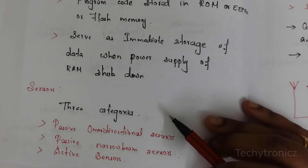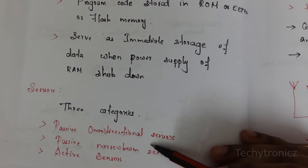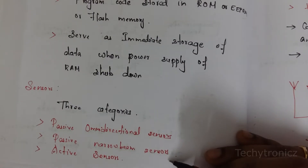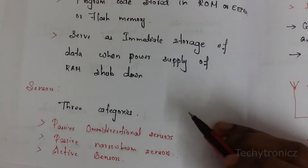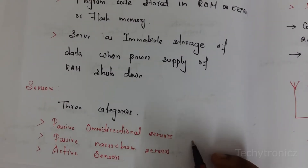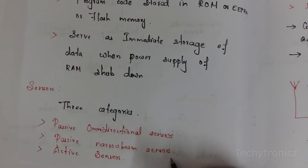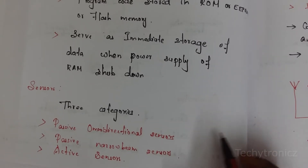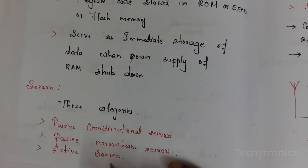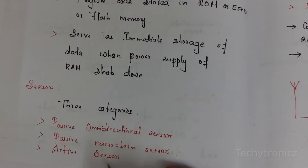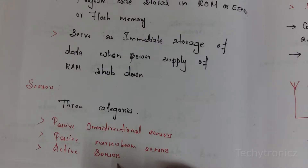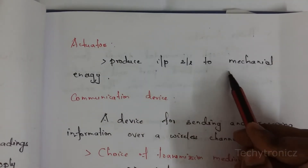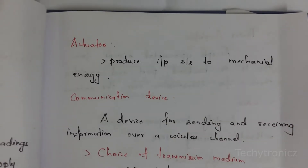The next component is sensors, which fall into three categories: passive omnidirectional sensors, passive narrow beam sensors, and active sensors. Passive omnidirectional sensors cover 360 degrees at a time. Passive narrow beam sensors — for example, a camera — are allowed to rotate if necessary to follow a target. Active sensors emit energy and measure the reflected energy. Actuators produce input signals through mechanical energy.